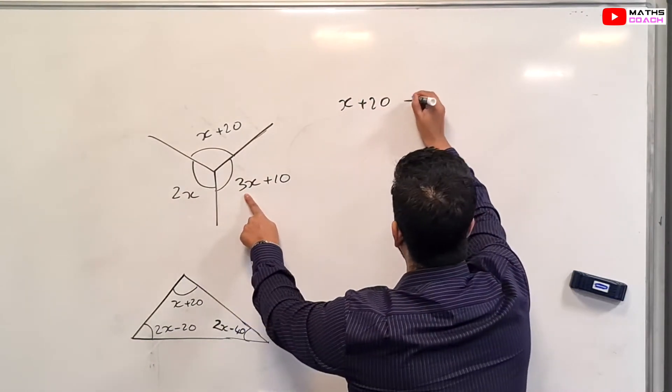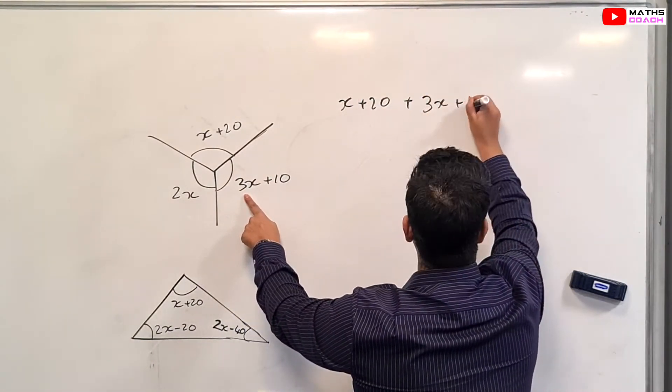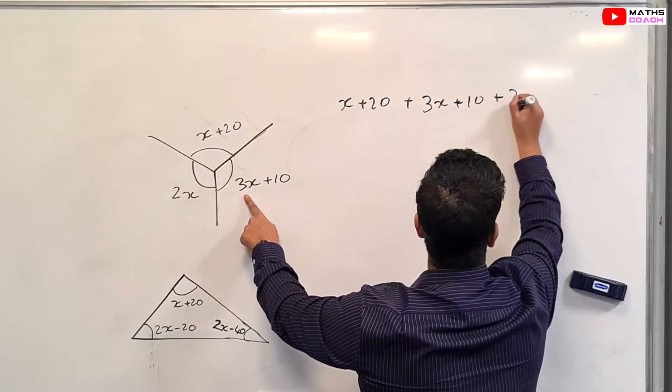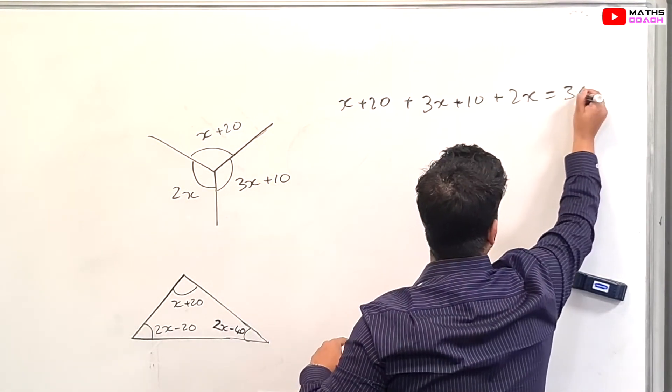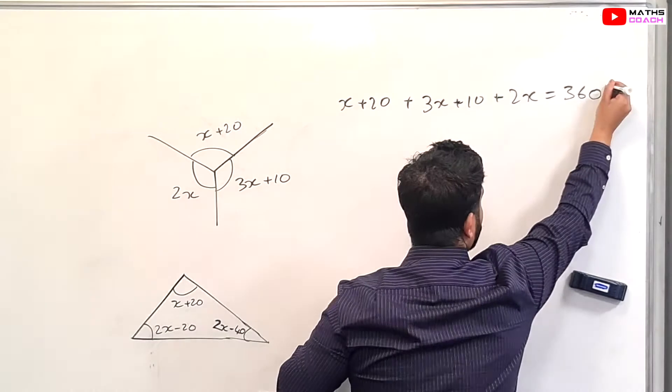So let's form our equations now. X plus 20 plus 3X plus 10 plus 2X, all of that equals 360 degrees.